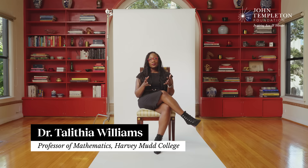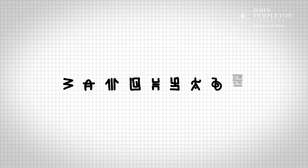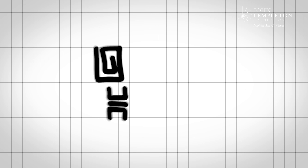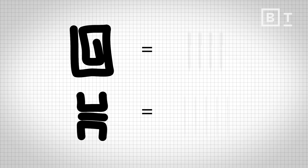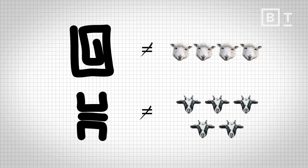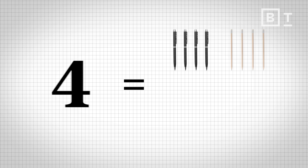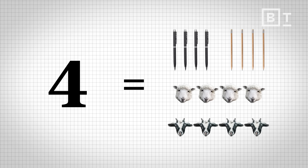Part of what was revolutionary in this transition to numbers being actual objects that we manipulate is that mathematics really became a universal language. Previously, numbers were just used as placeholders. The way that four pens would be represented would be by some symbol, and five pencils might be represented by a different symbol, but there was no way to compare them to someone who had five goats or four sheep. Now I can take the number four and apply it to anything, and it represents the same amount.